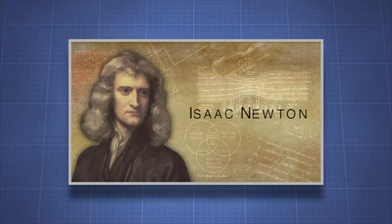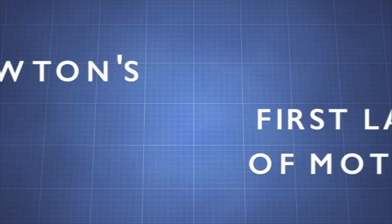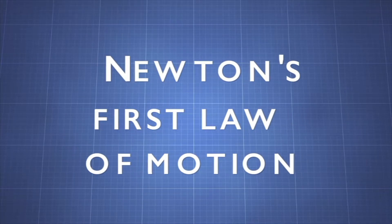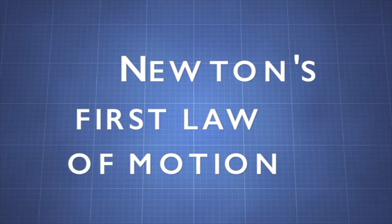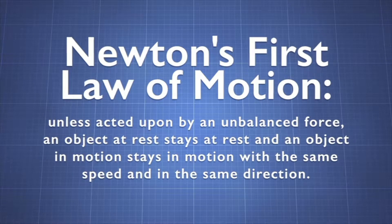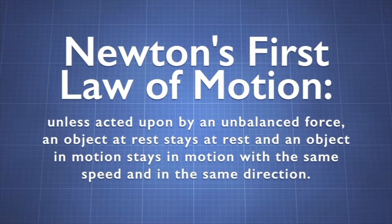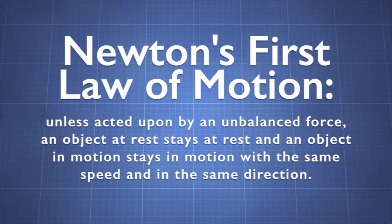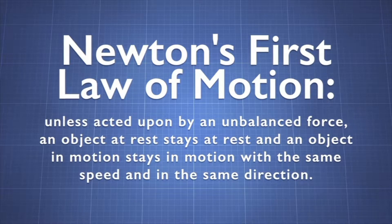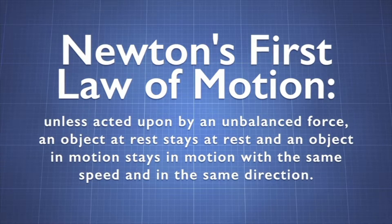English mathematician Isaac Newton was the first to discover the principle of inertia. So the law of inertia is referred to as Newton's first law of motion. This law states that unless acted upon by an unbalanced force, an object at rest stays at rest and an object in motion stays in motion with the same speed and in the same direction.